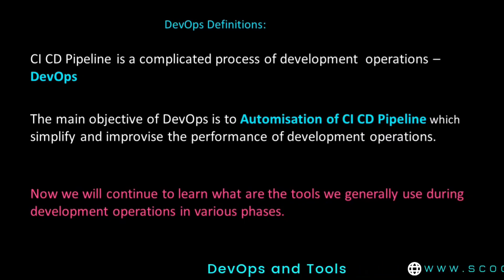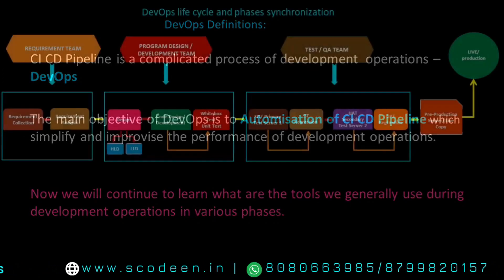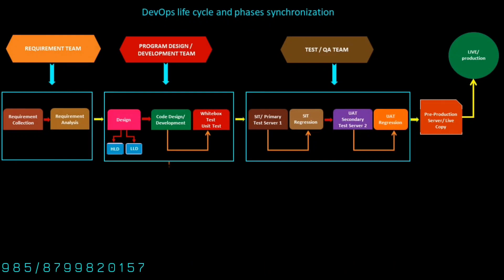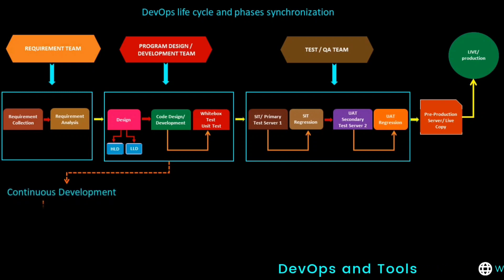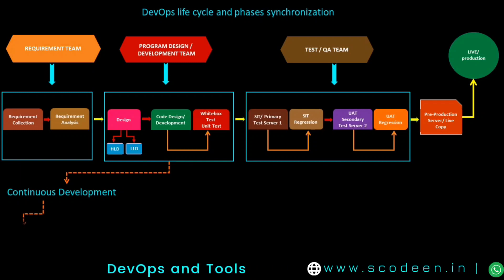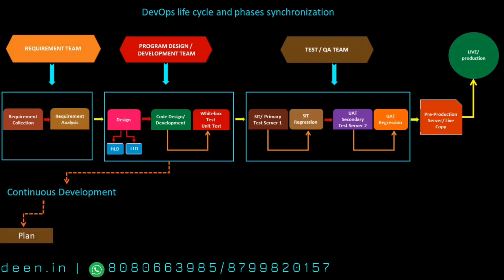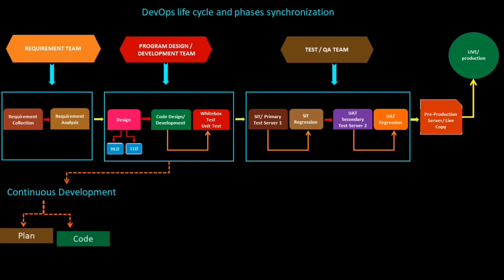Next, we will cover what are the various tools you can use at different phases. Observe the process flow diagram. In the code and design development phase — the first DevOps phase — the continuous development process gets started. In the continuous development process, we involve planning the code and designing the code. These are the DevOps lifecycle process phases: planning and coding.